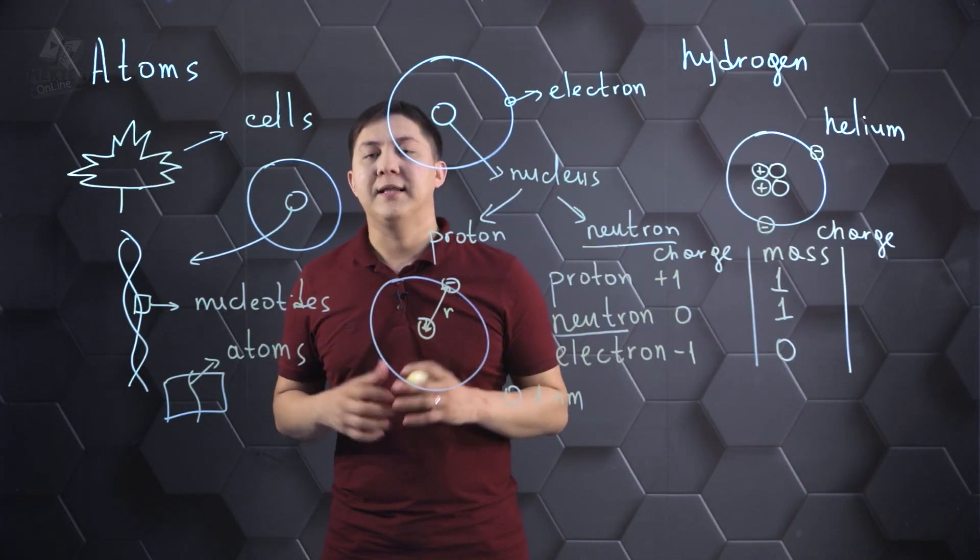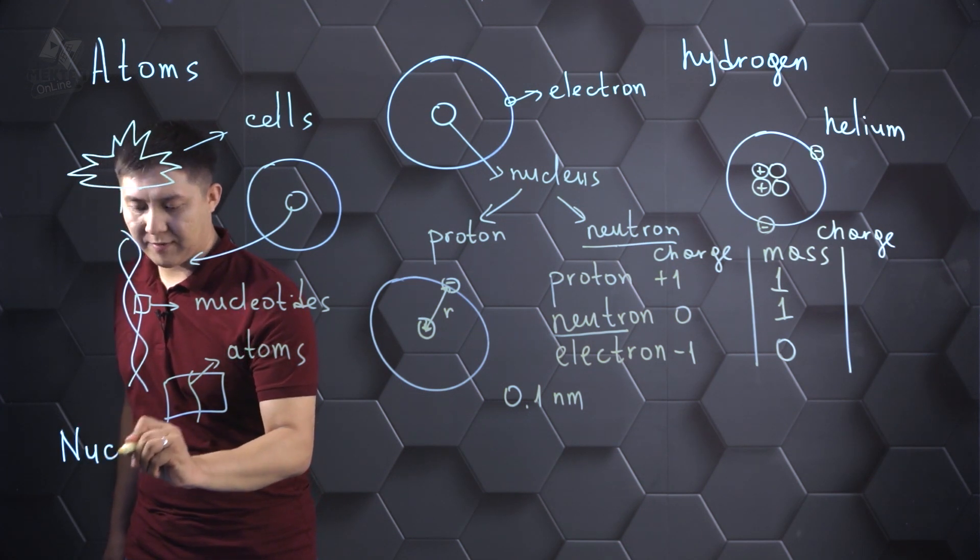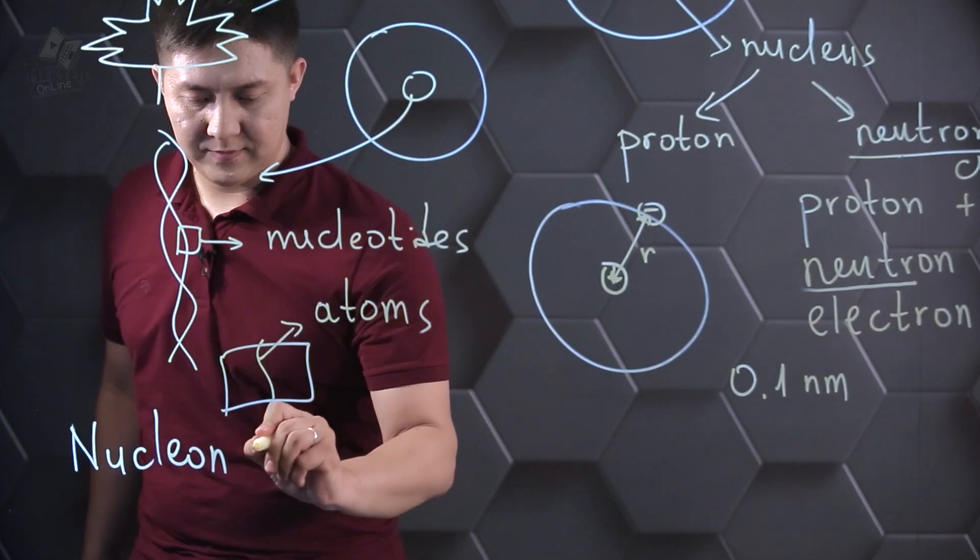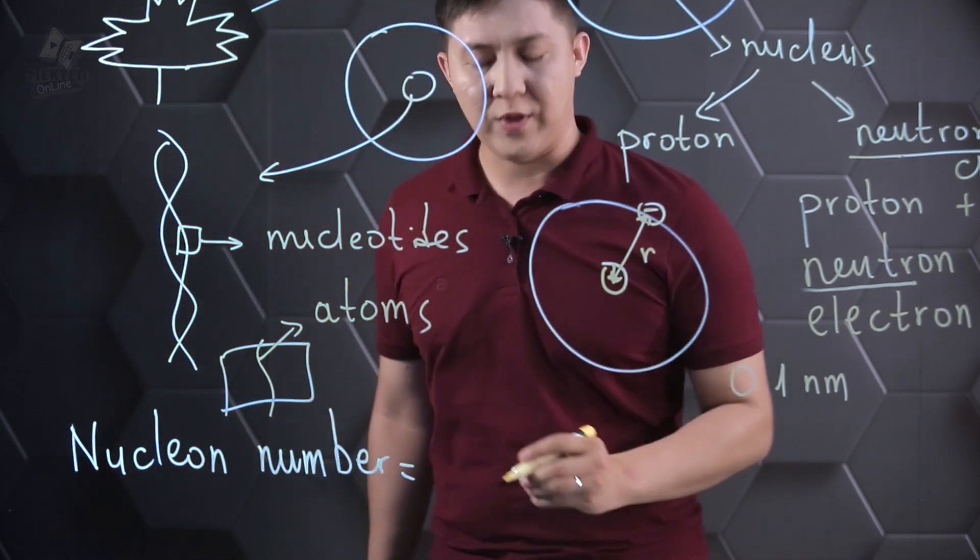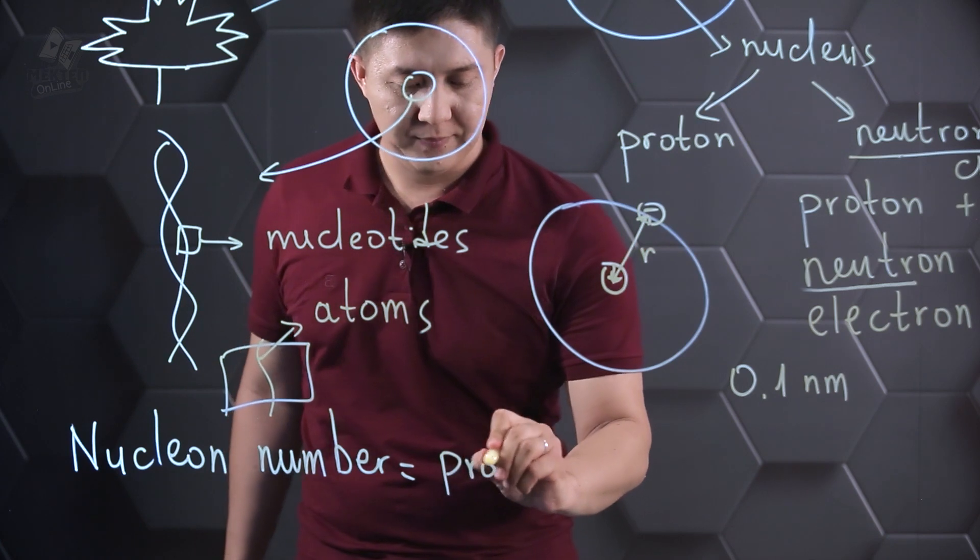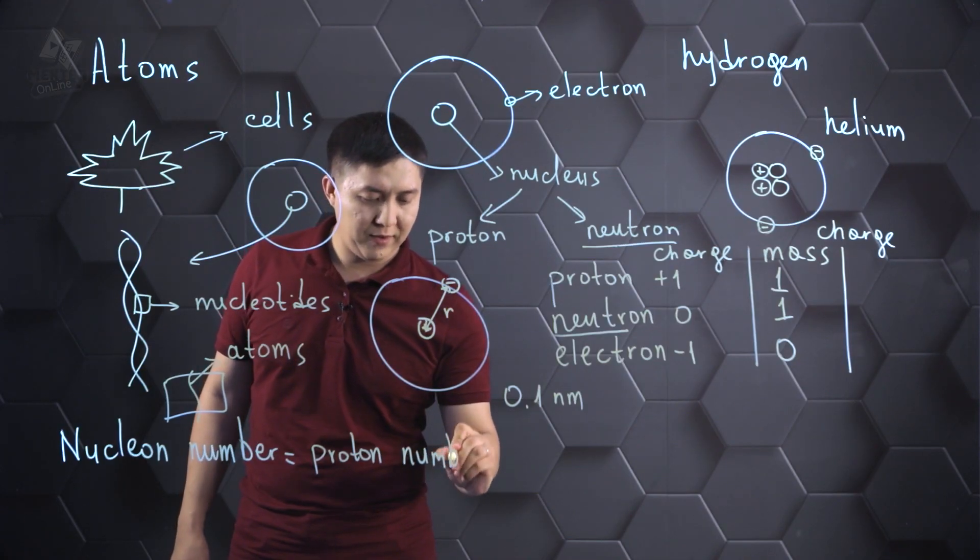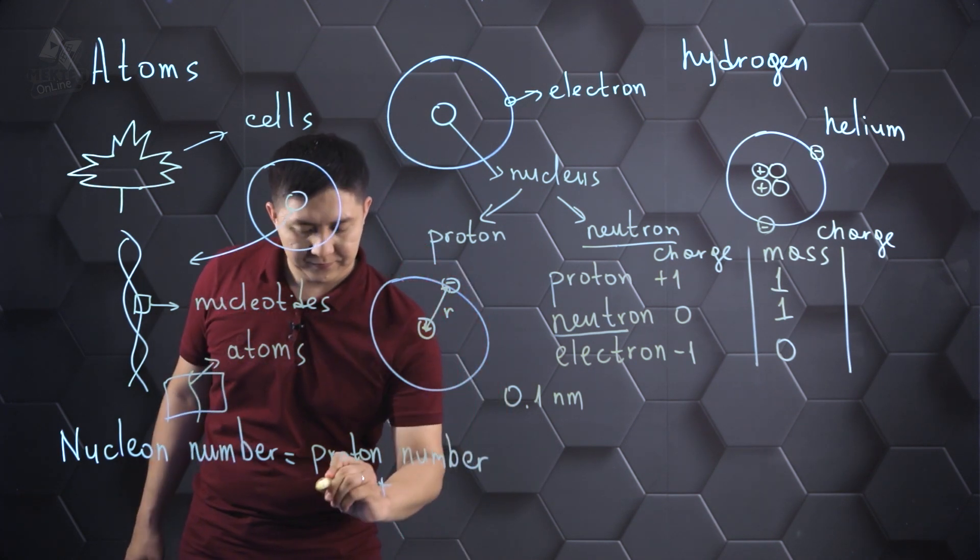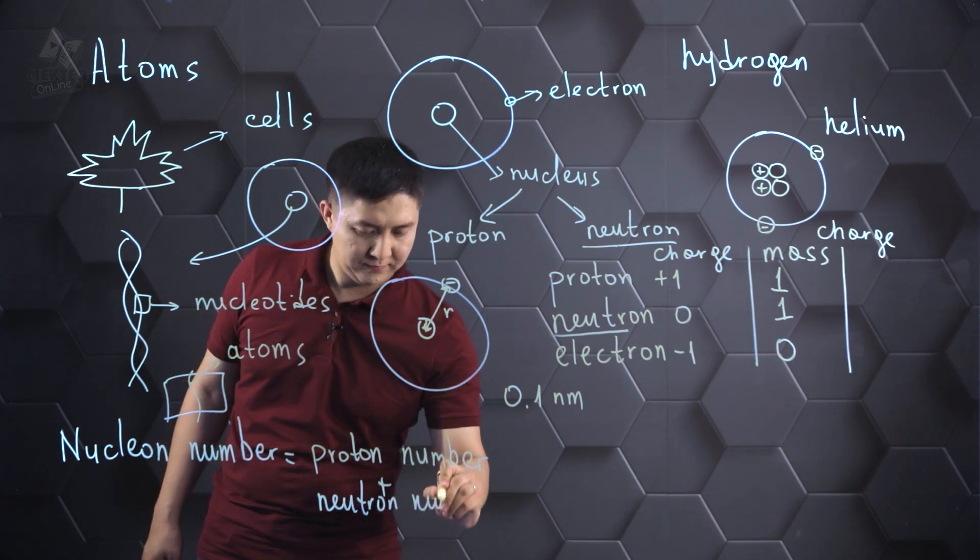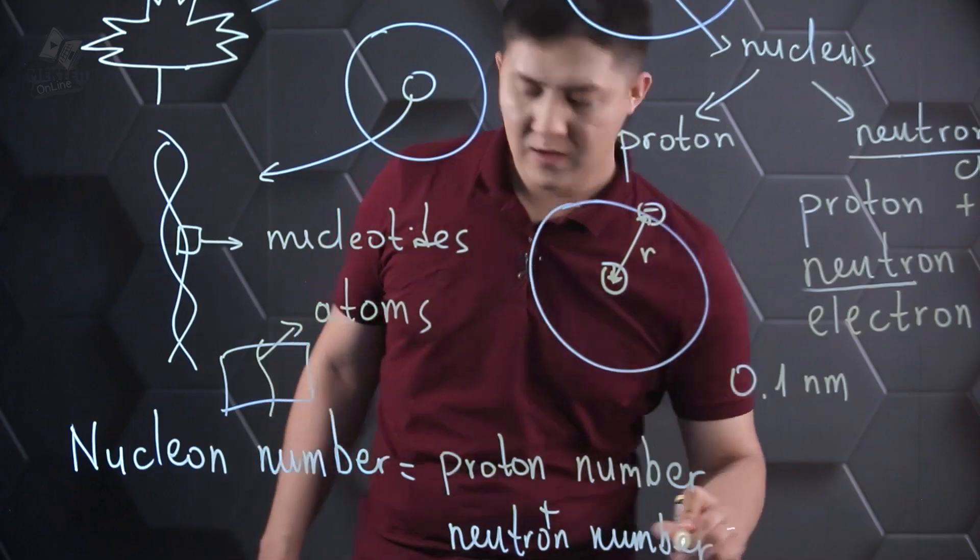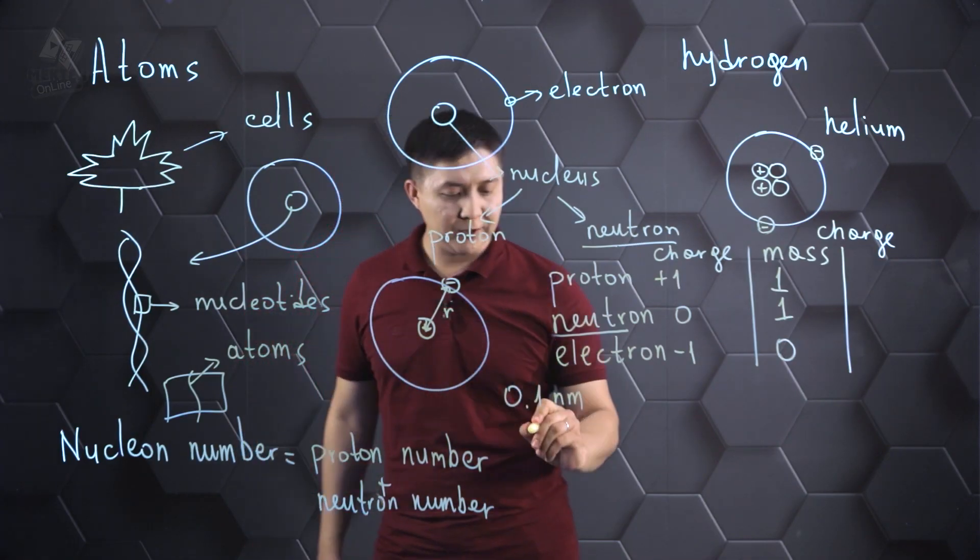Now, let's talk about nucleon number and mass number. Nucleon number is the sum of proton number and neutron number. Nucleon number is equal to the mass number, if we look to the periodic table.